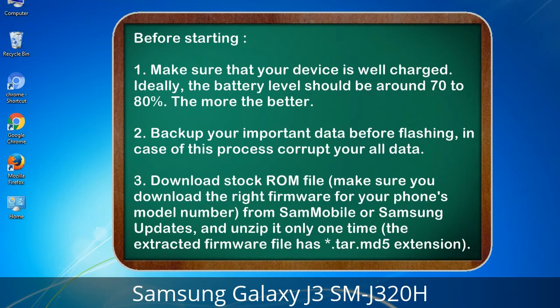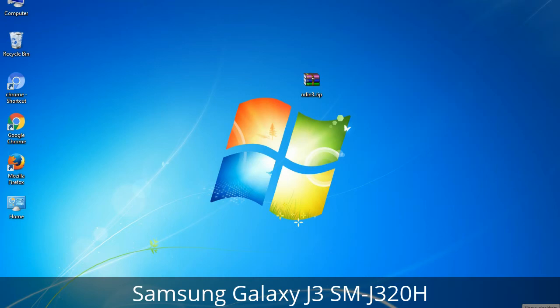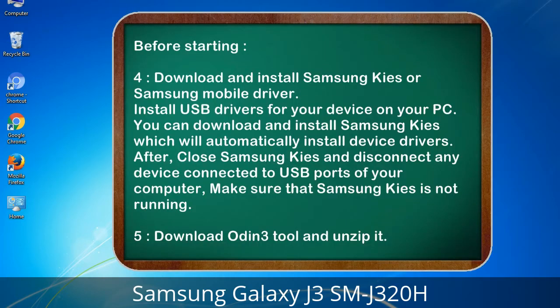2. Back up your important data before flashing, in case this process corrupts all your data. 3. Download the stock ROM file. Make sure you download the right firmware for your phone's model number, from Sammobile or Samsung updates, and unzip it only one time. The extracted firmware file has a *.tar.md5 extension.